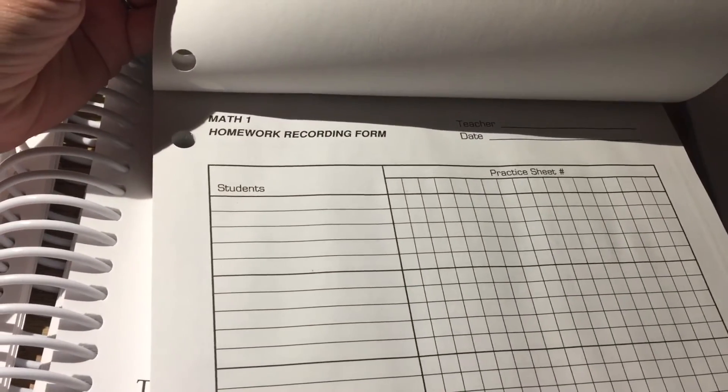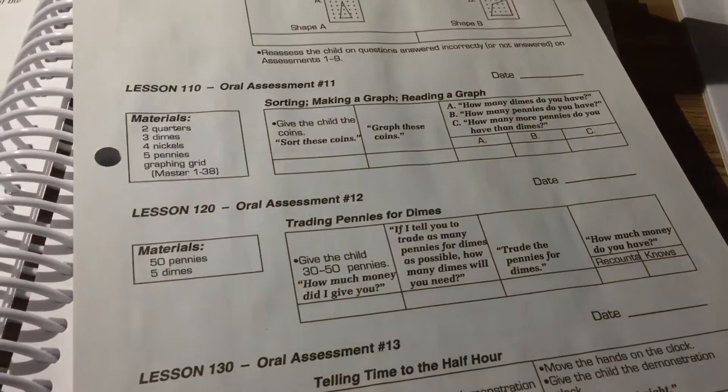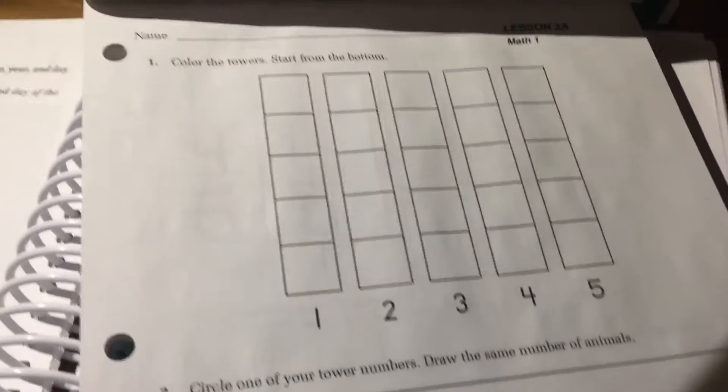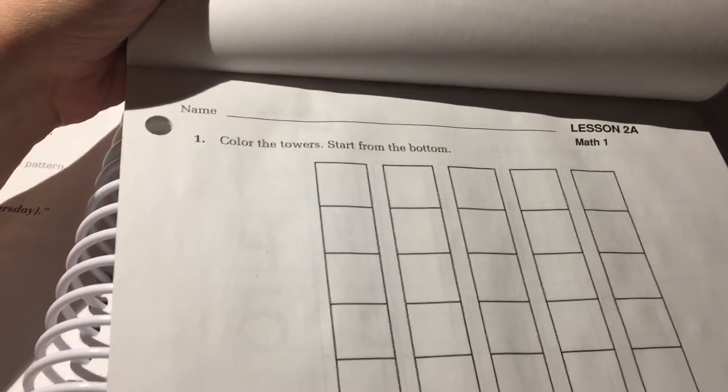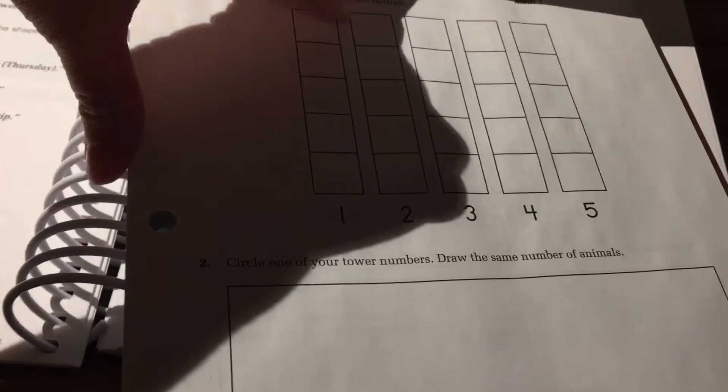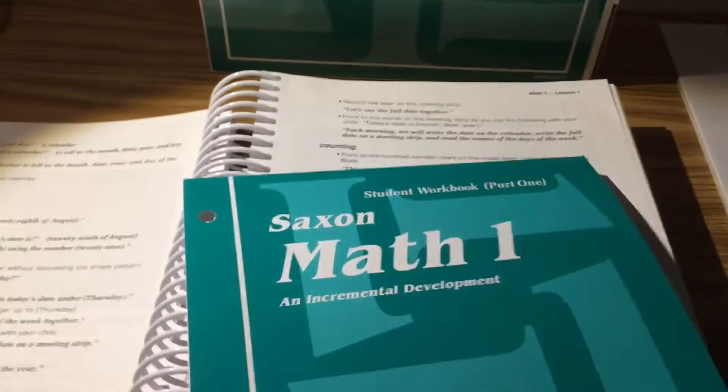The first couple of pages just gives you some homework recording forms that you can use if you need to. Some assessments. And the materials you're going to be using for the assessments when you do them. There's a dear parent letter. And then it goes right into the lesson. This one is lesson two because like I said the first lesson we were using the meeting book. So by the second lesson you're doing some patterning.